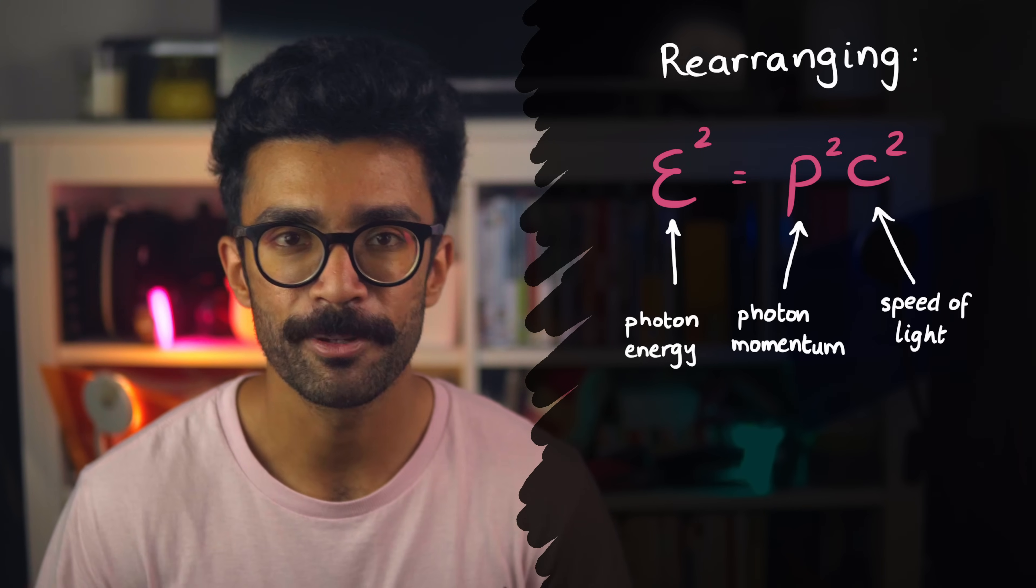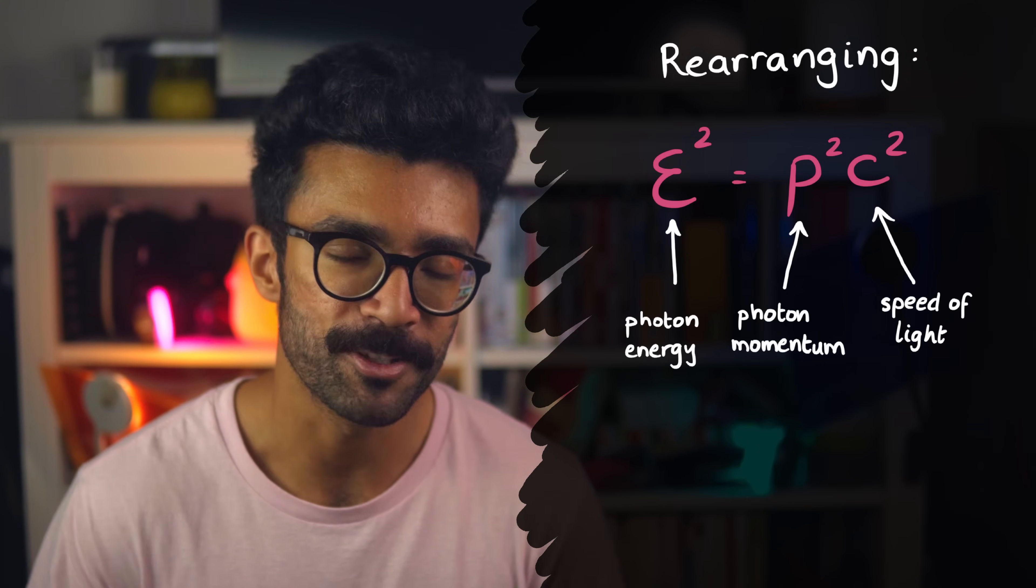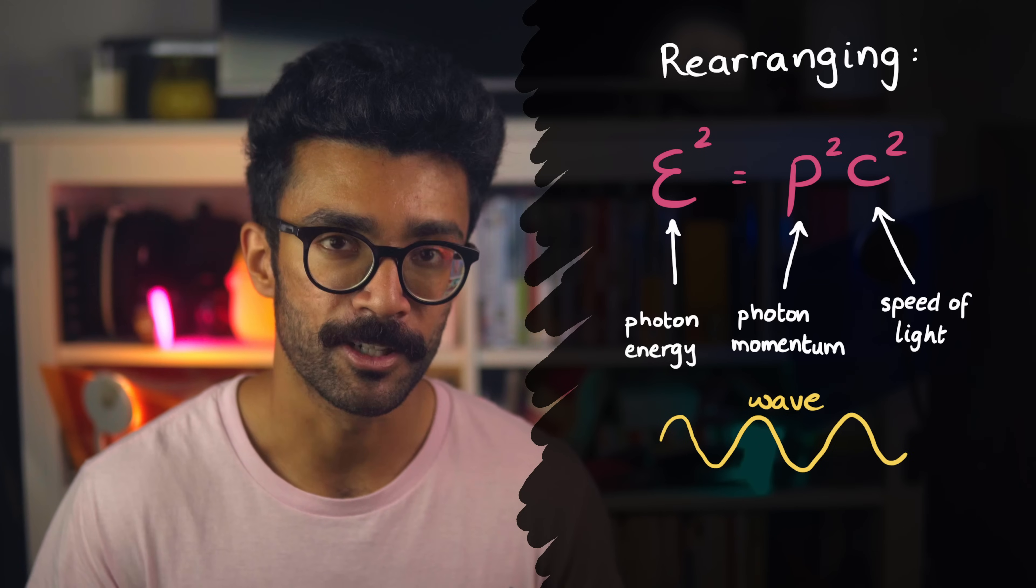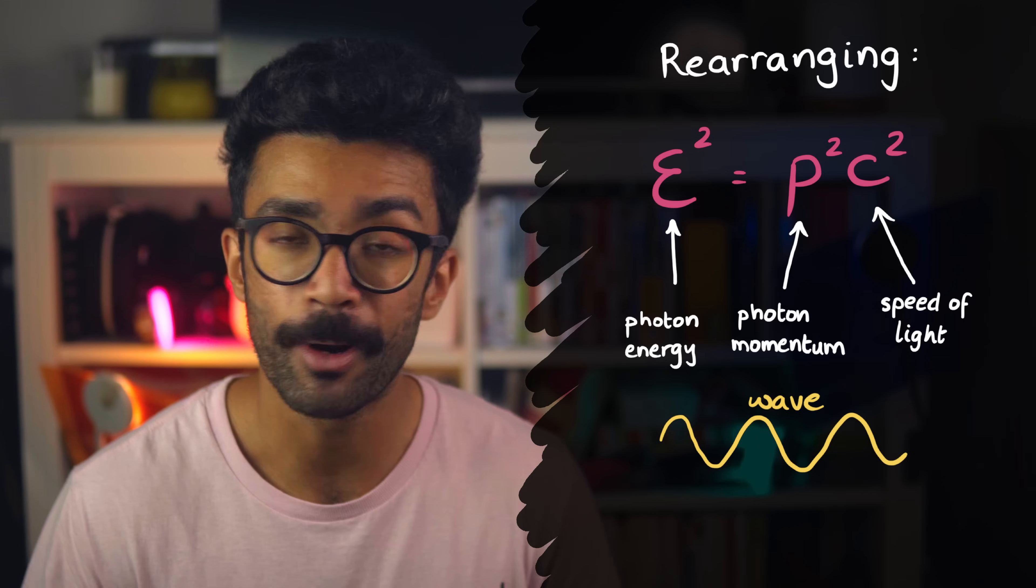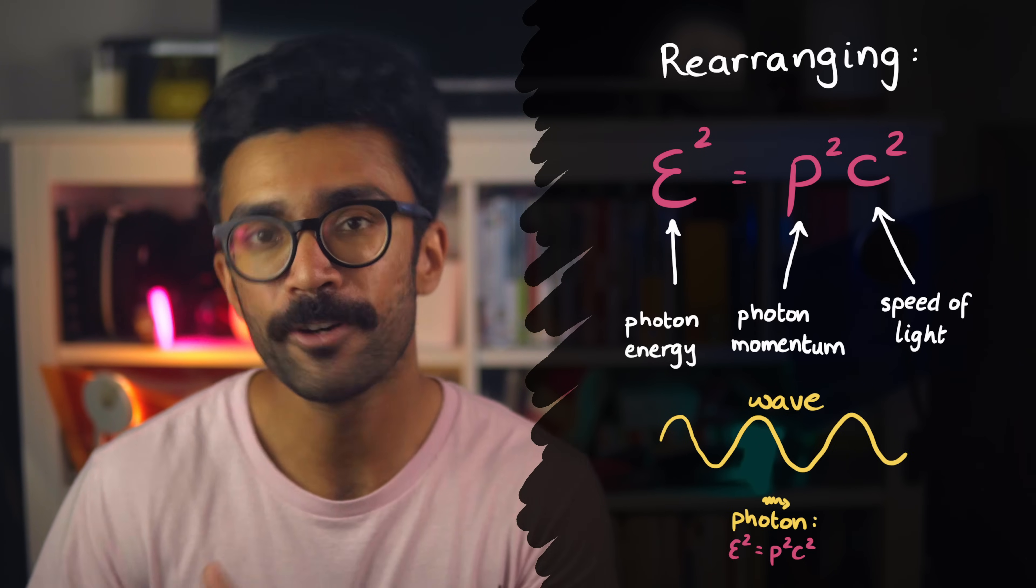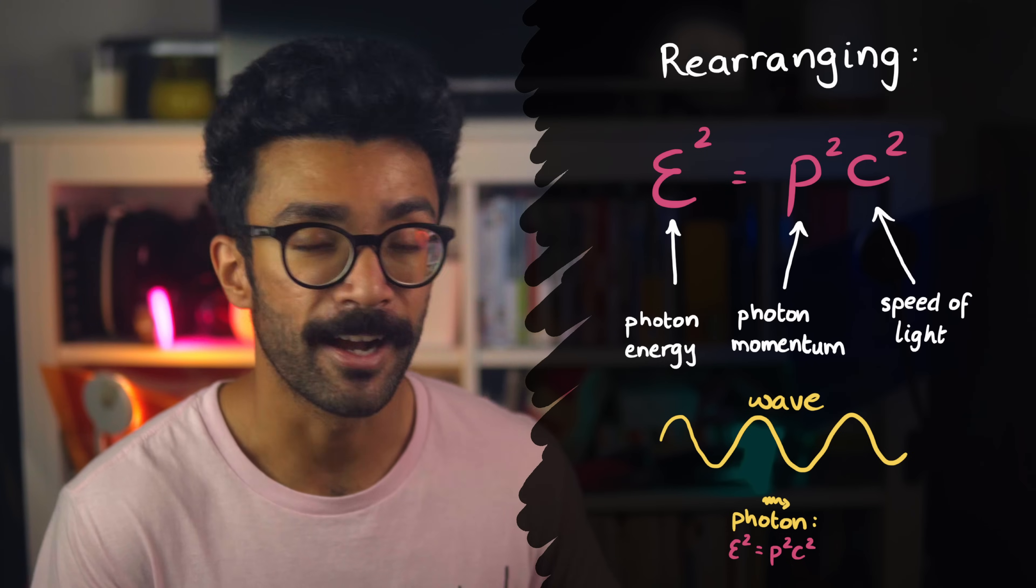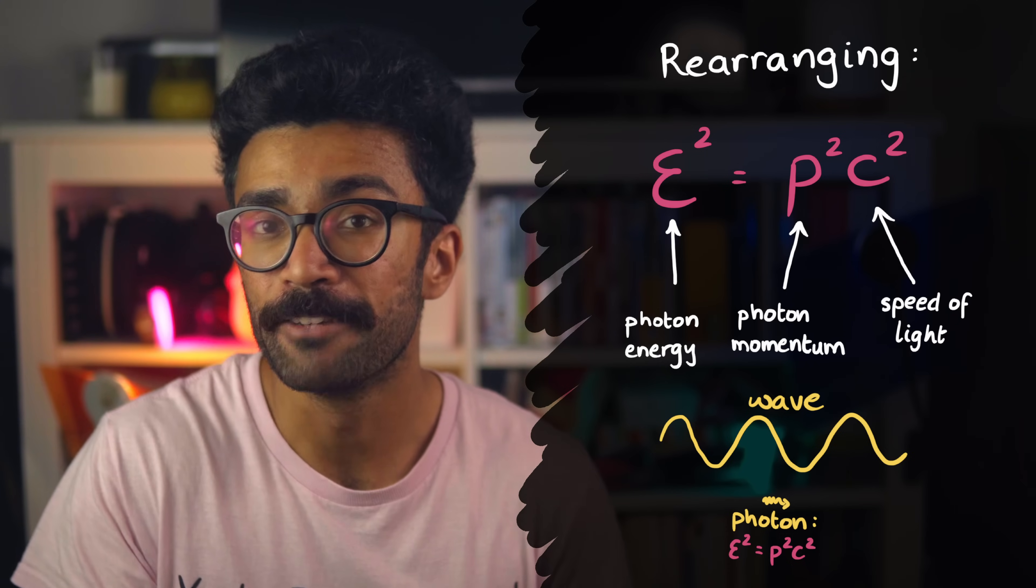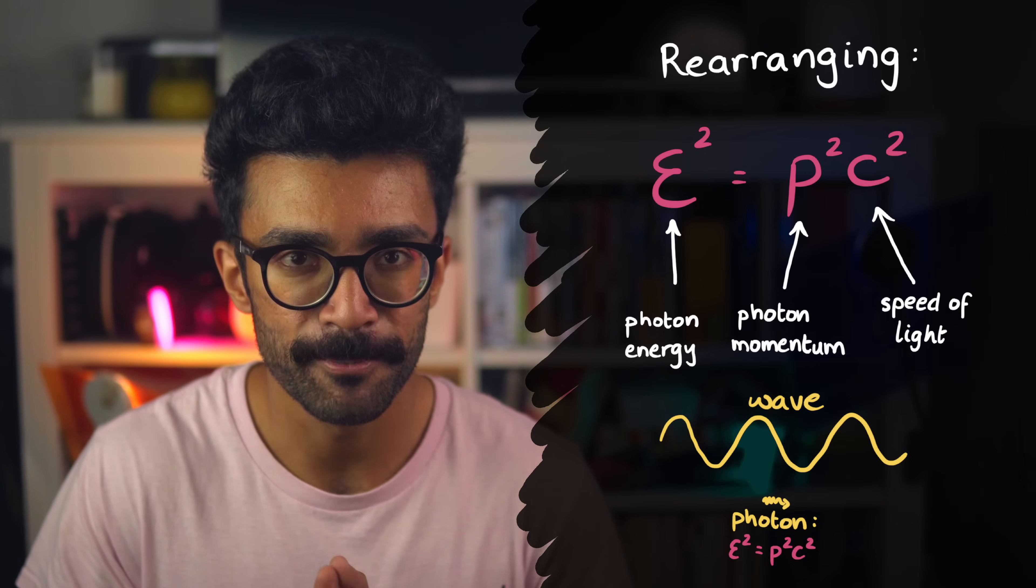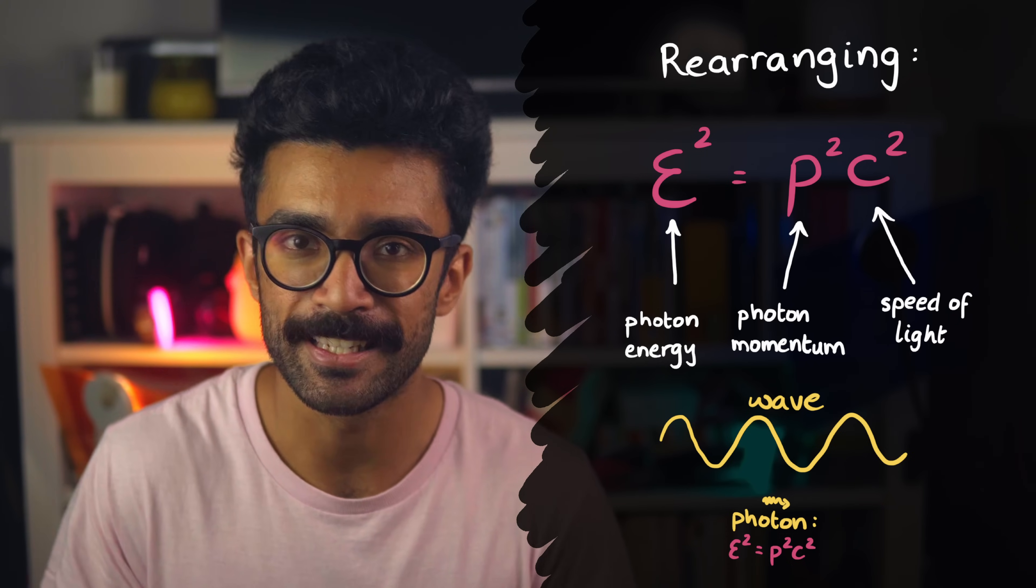Some of us may already be familiar with the famous constant c, the speed of light. So, if our EM waves are to be allowed solutions to our wave equation, then their corresponding photons will have to follow this kind of relationship. And they do. In fact, this is the defining relationship between a photon's energy and its momentum.